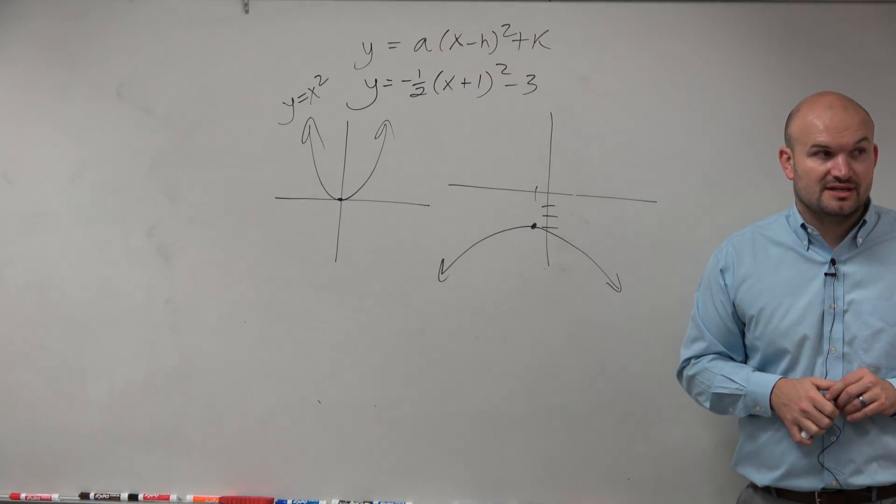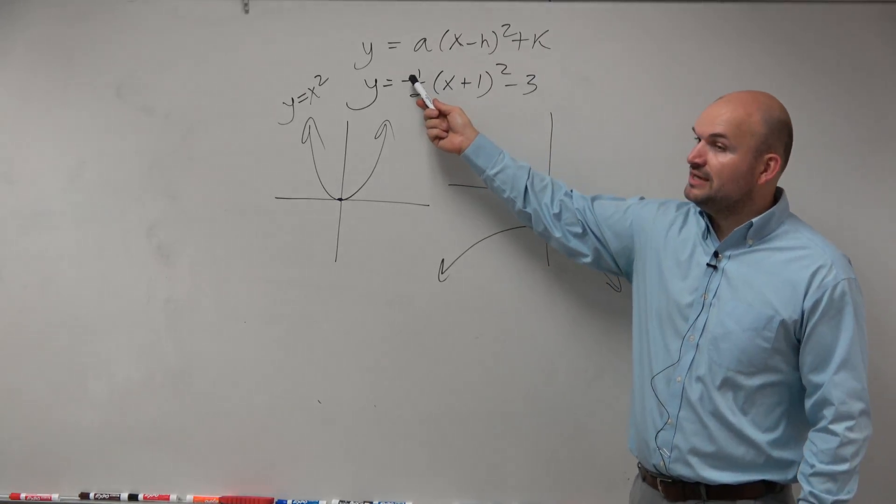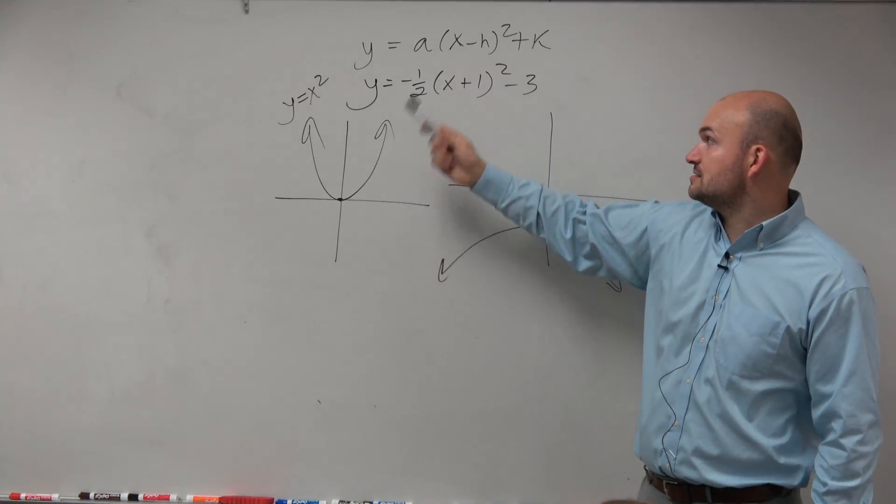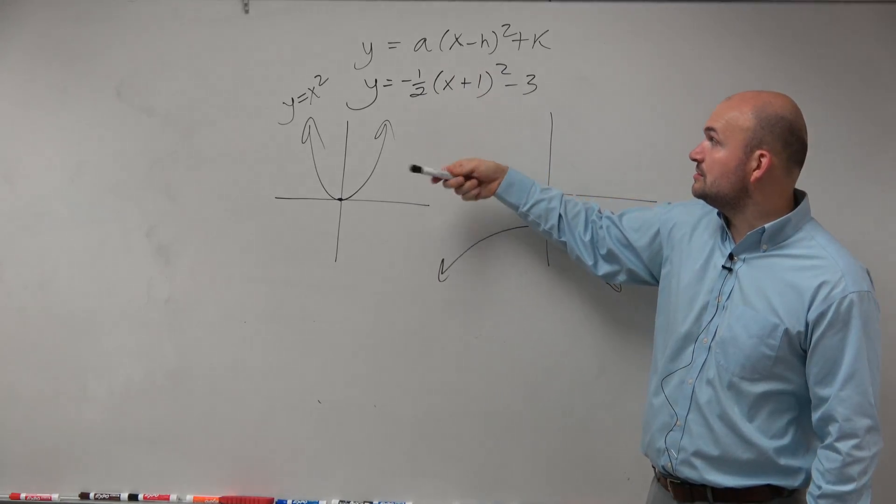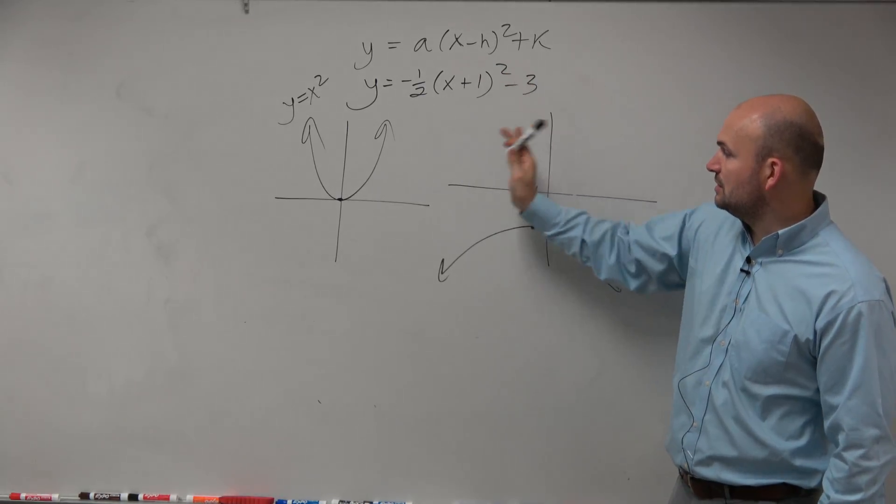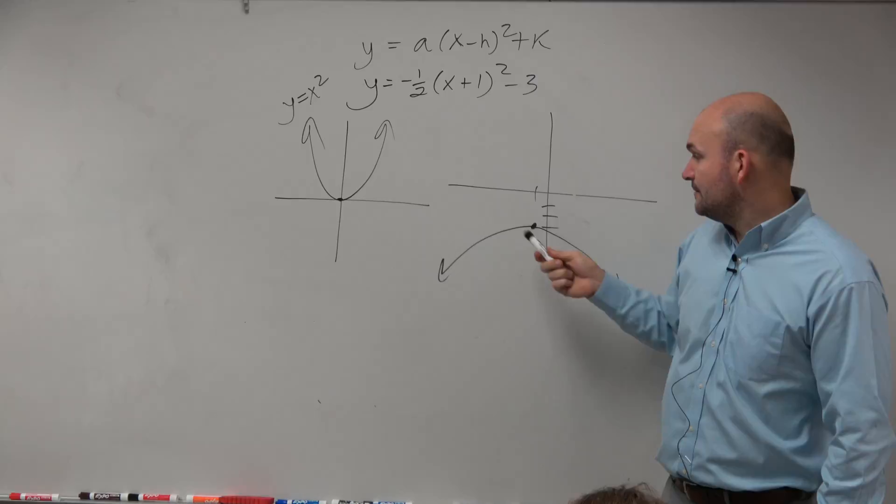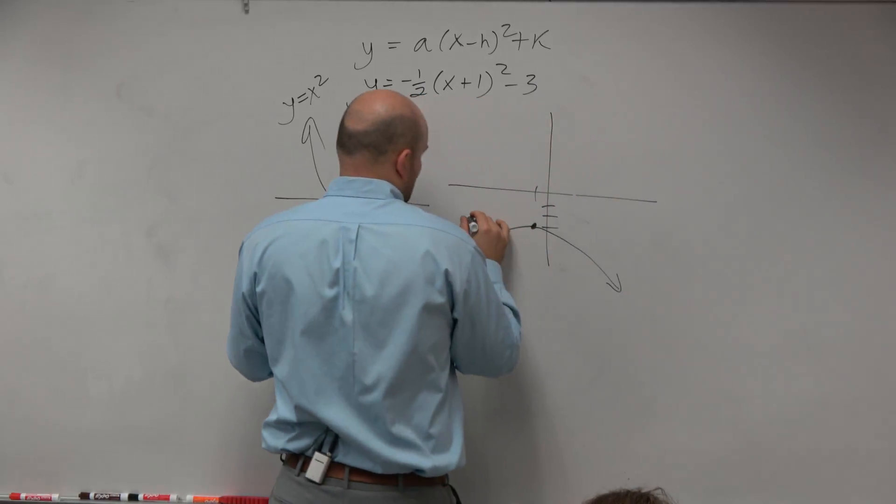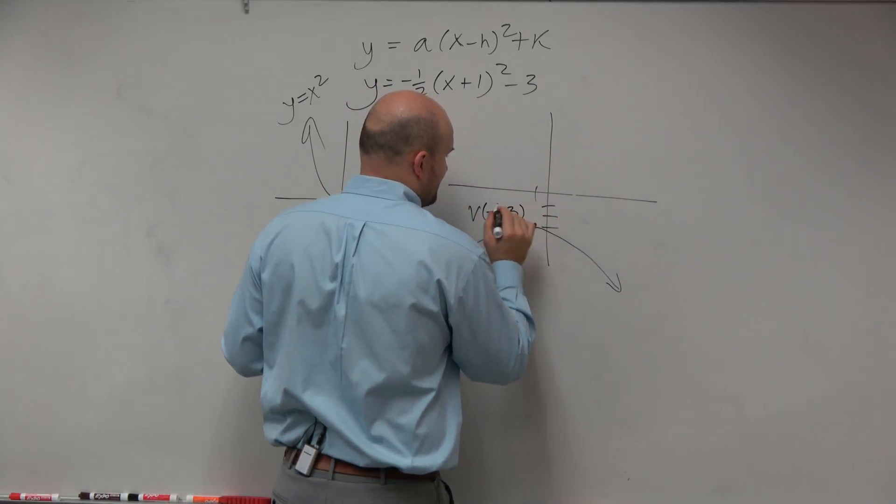I didn't have to use graphing technology. I said negative, that means it reflects the x-axis. 1 half on the outside, that's a vertical compression. That's my h, so it's opposite, so it's negative to the left one. And that's my k, that's down three. So therefore, my vertex is negative one comma negative three.